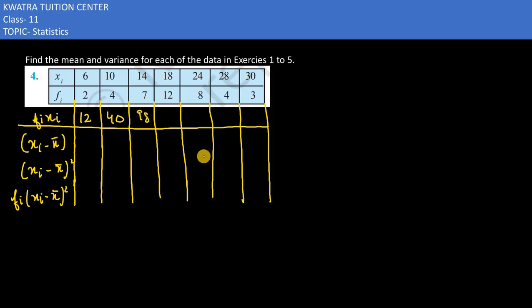Would be 98. 18 into 12 would be 216. Then I have 24 into 8, that is 192. 28 into 4 is there, which is 112, and last is 90.